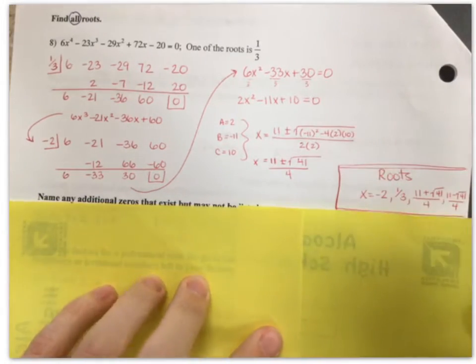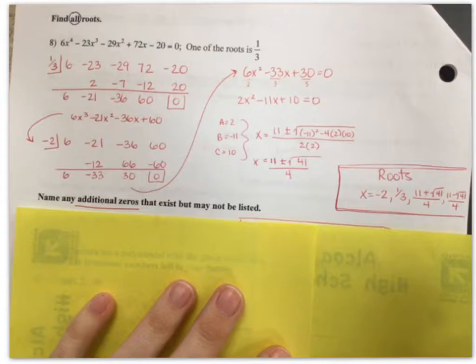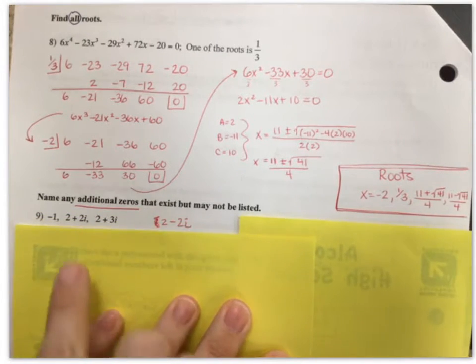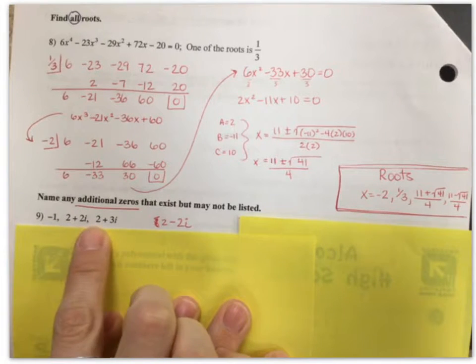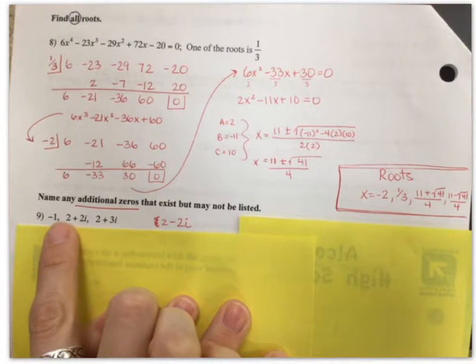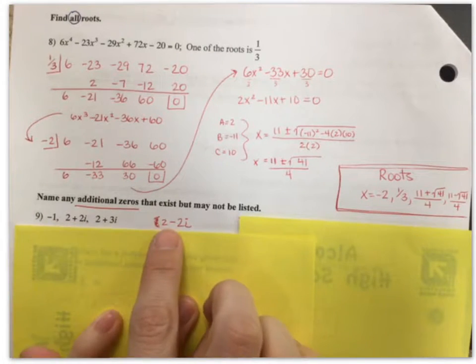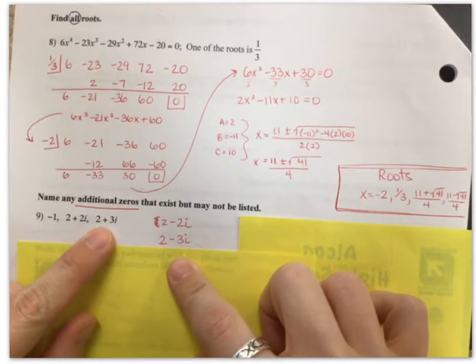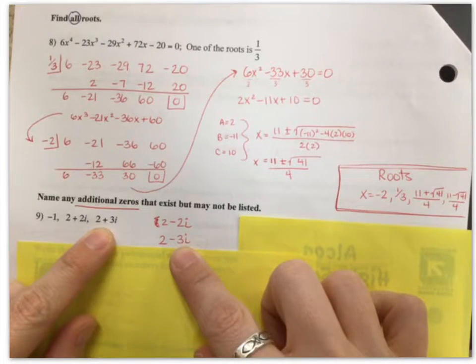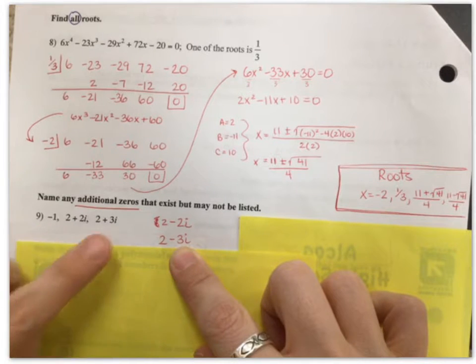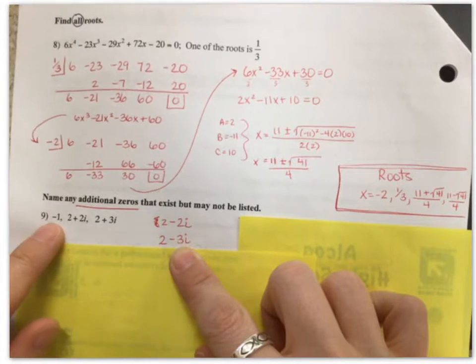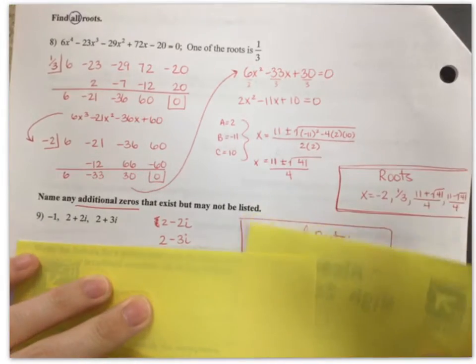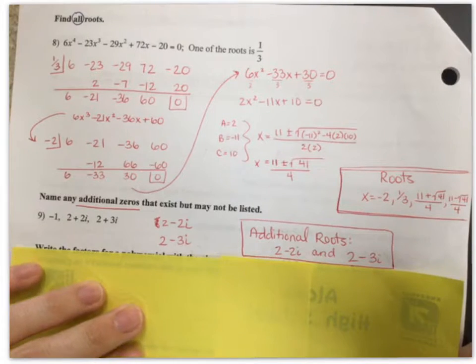All right. Name any additional zeros that exist but that may not be listed. So if I look at my problem, this is just a reminder that imaginary roots have to come in conjugates. So if this is 2 plus 2i, then 2 minus 2i also has to be a root. The same thing for 2 plus 3i. 2 minus 3i also has to be a root. That only works for imaginary and square root numbers. Negative 1, I don't need to have another one that goes with that. It can be on its own. So those are my additional roots. 2 minus 2i and 2 minus 3i.